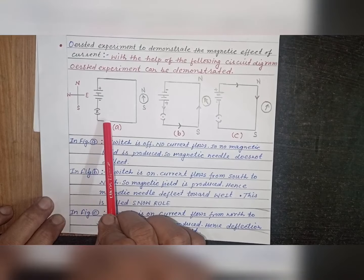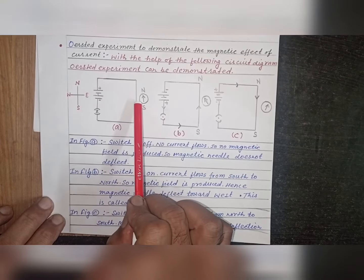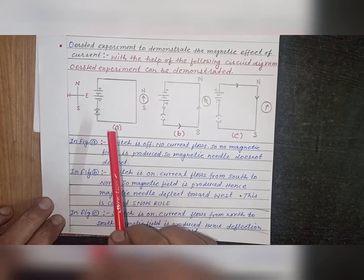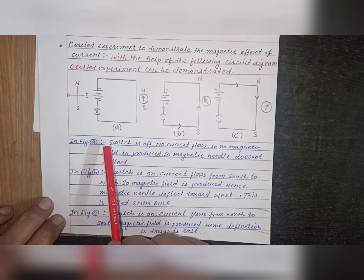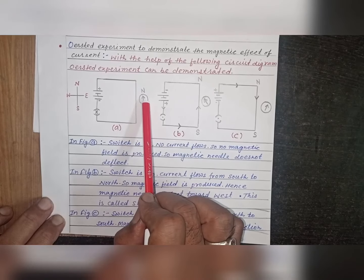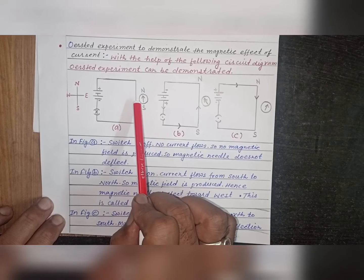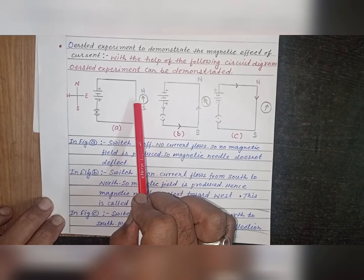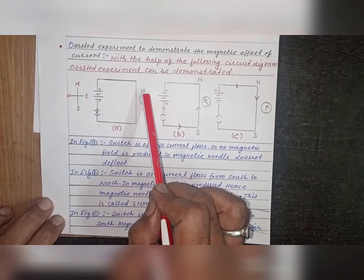So no magnetic field is produced around the wire. Hence, magnetic needle placed below the wire will not deflect.